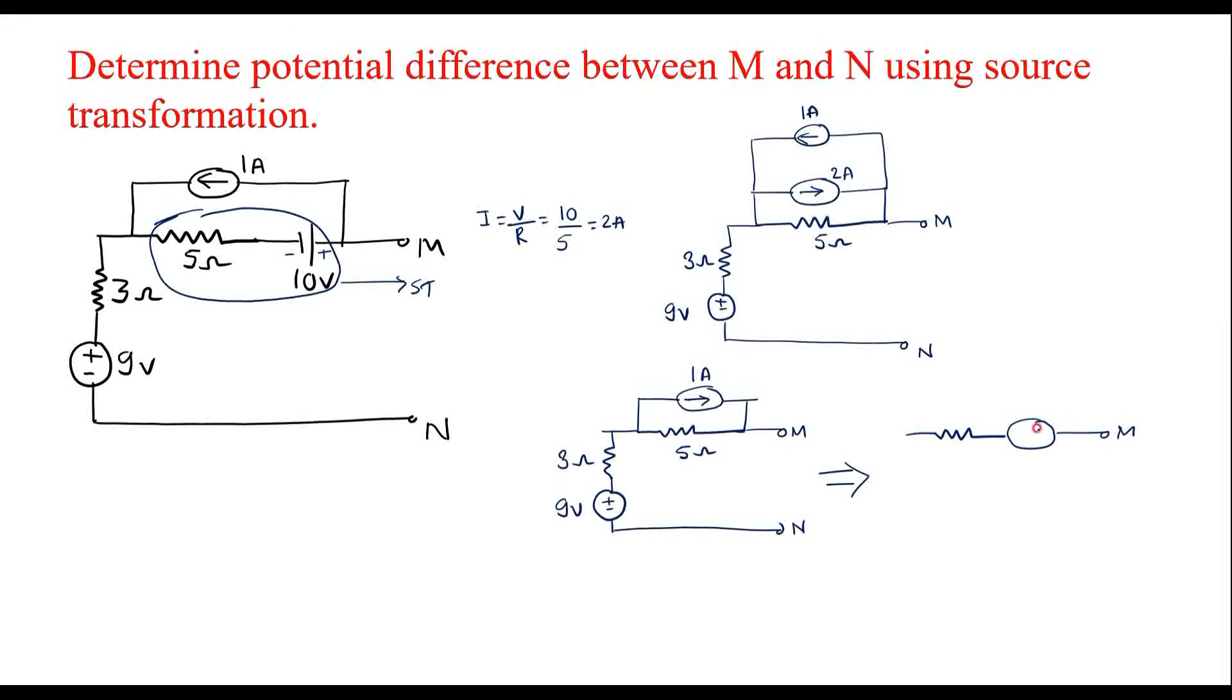This is M terminal. Here the head end is this side, so this end should be positive and this is negative. The value of resistor is 5 ohm. The value of voltage is V equals I into R. I value is 1, resistor value is 5. Therefore, voltage is 5 volt and this 3 ohm is connected in series and 9 volt is connected as it is.